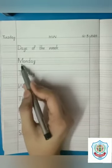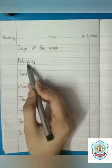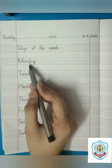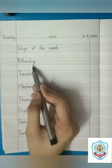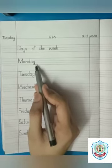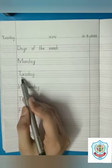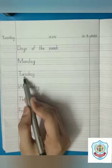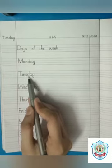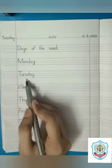Monday. Monday. The next one is Tuesday. T has a sound T. E makes a sound U. S has a sound Z. D has a sound D. Y makes a sound A. Tuesday.